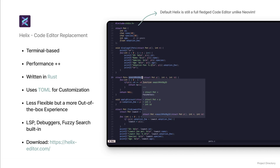Helix is a post-modern modal text editor, just like Vim, that's also written in Rust, but is much lighter. It takes inspiration from Vim's modal editing but simplifies it. What sold me on Helix is that it works great right out of the box. It has built-in support for language servers, debugging, and a fantastic fuzzy finder. For my day-to-day coding, Helix has become my go-to IDE, and I rarely find myself reaching for VS Code anymore.